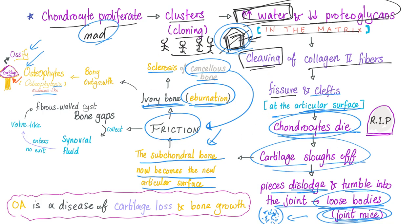In summary: cloning, cleavage, clefts, breakdown, joint mice (made of cartilage), ivory ebernation (made of bone), osteophytes (made of bone, capped by cartilage that ossifies). Does this sound like mechanical wear and tear? No — it's a biomechanical process, not just mechanical but also biological. It destroys every extracellular component of cartilage and destroys the subchondral bone as well, leading to bony overgrowth. Osteoarthritis is a disease of cartilage loss and bone growth.